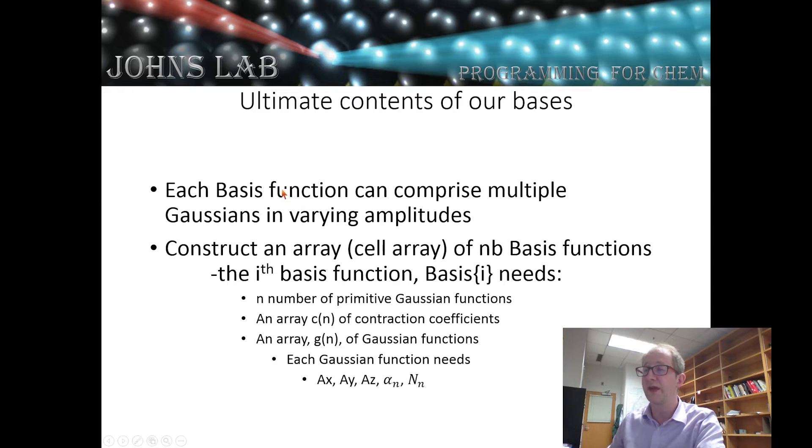For that given basis function, we also need to have an array that will have n number of elements that we're going to call c. And c sub n will be the contraction coefficient for the nth Gaussian. We also need to give it an array of Gaussian functions. And each Gaussian function is going to contain its center location, so its x, y, and z component, its exponent alpha, and its normalization constant n.